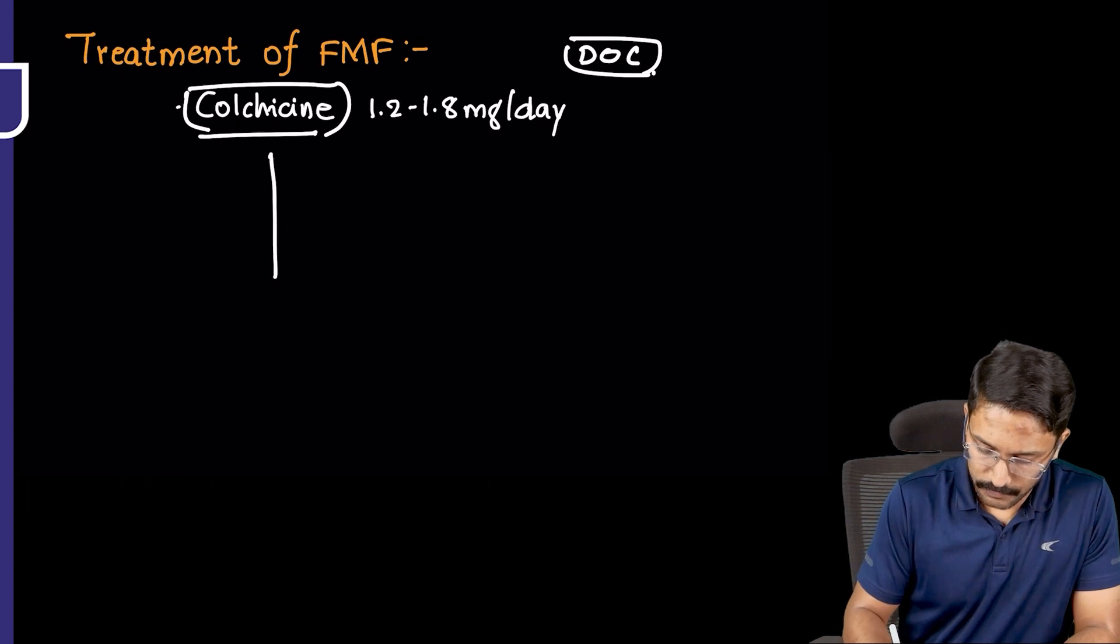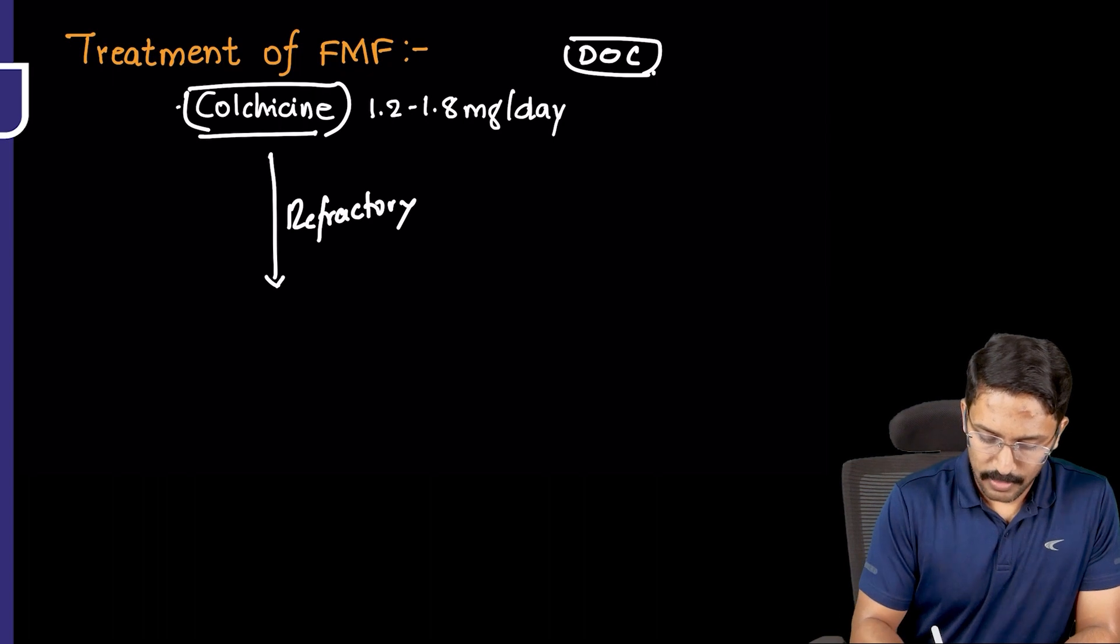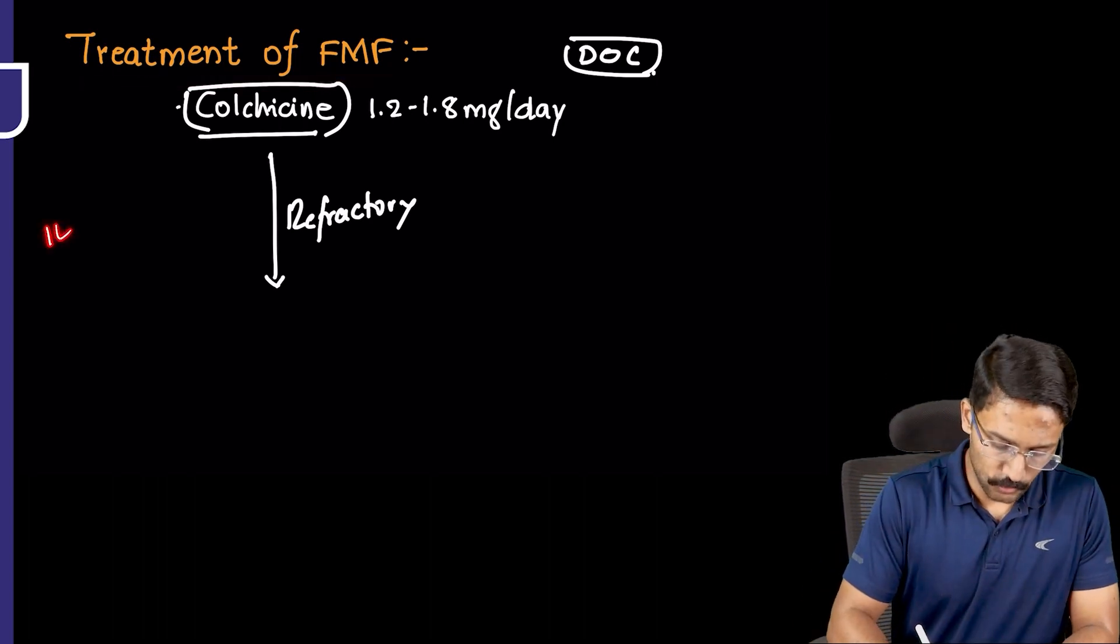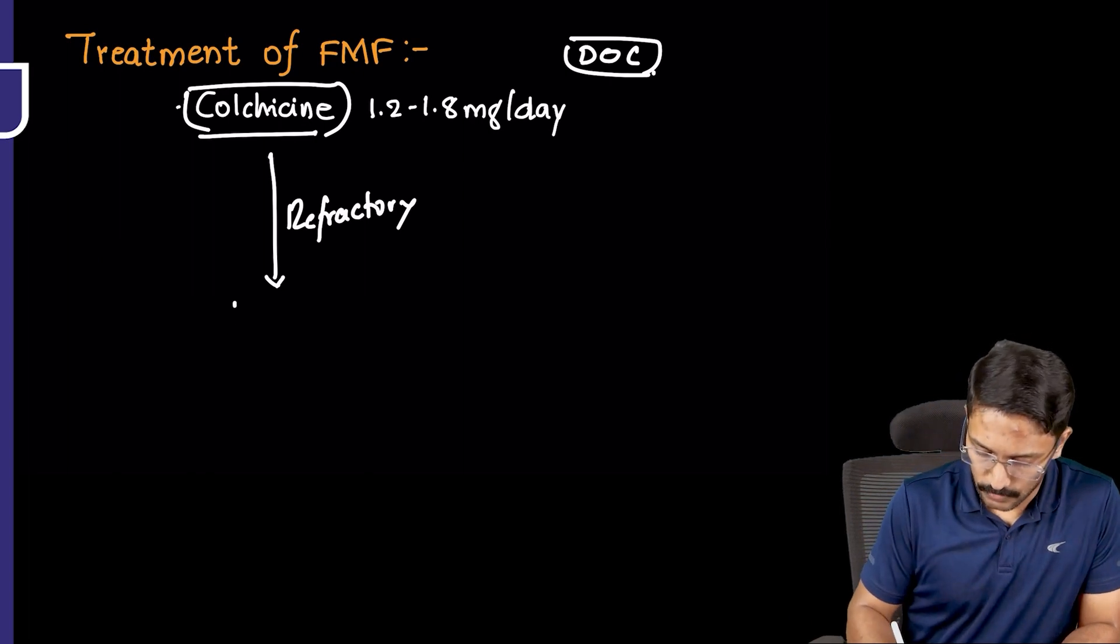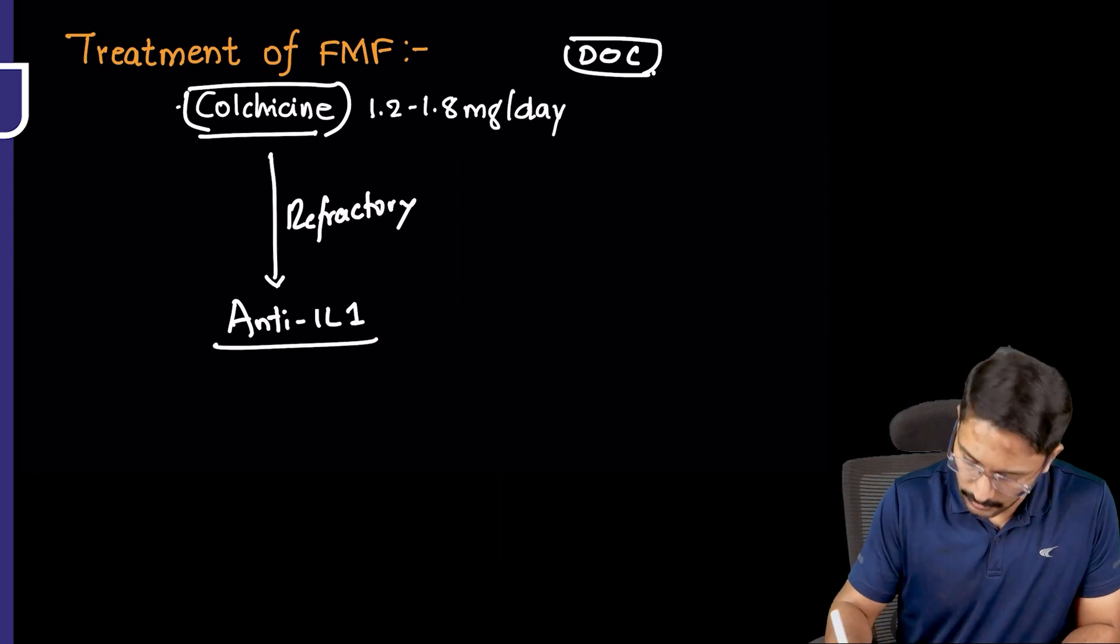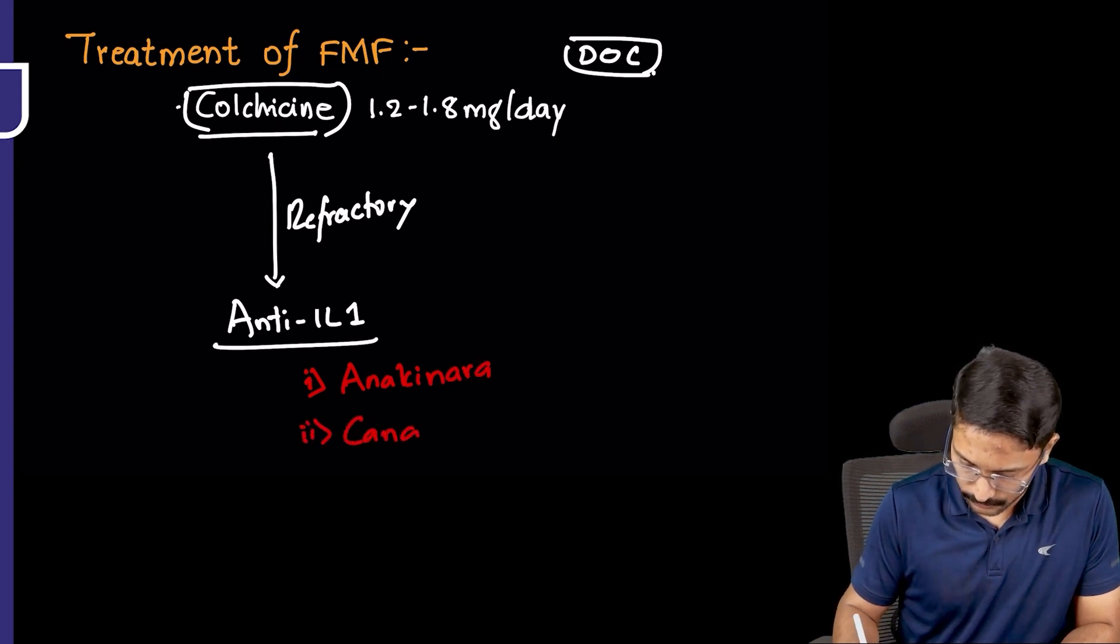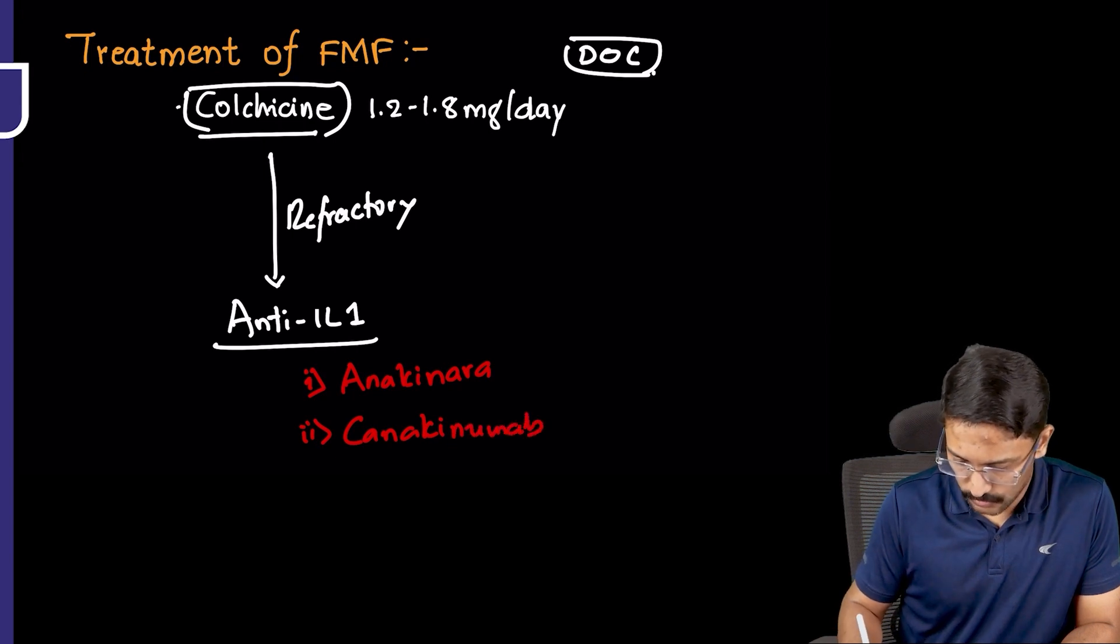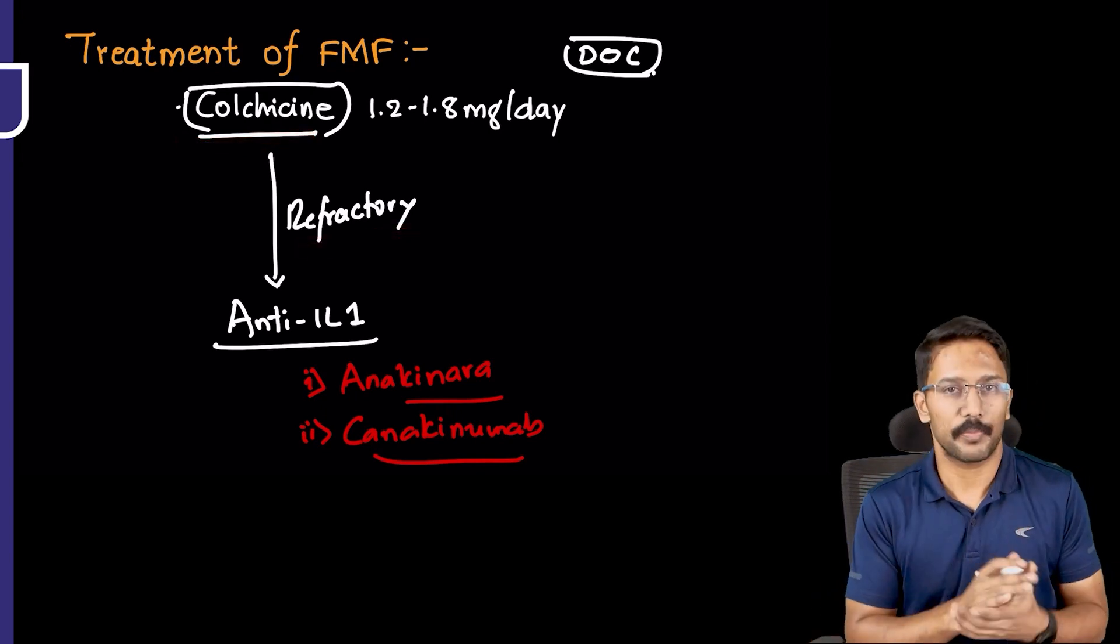Many patients may not respond well. If they are refractory to colchicine, what do we do? We studied familial Mediterranean fever under interleukin-1 related auto-inflammatory syndromes. So we can target interleukin-1 using anti-IL-1 drugs. Can you quote examples? Anakinra or canakinumab. These can be used as agents if colchicine fails to get the inflammatory episodes under control.